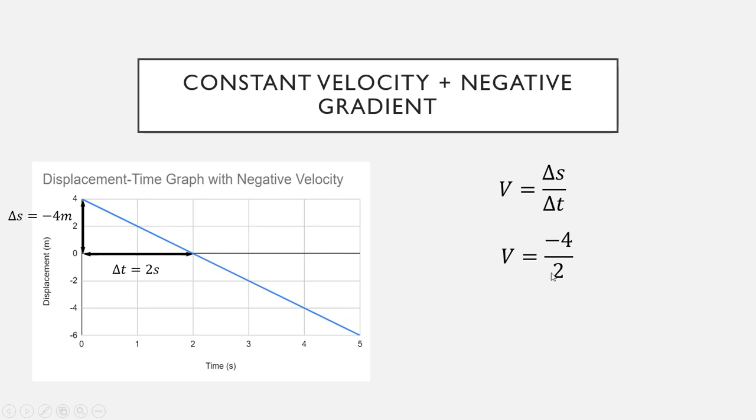Let's substitute those two numbers in. Our delta S of minus four goes on the top, our delta t on the bottom, and that gives us a velocity of minus two meters per second. And remember that displacement and velocity is a vector, so that's why we can have our minus there. Whenever you have a negative slope, you should be expecting a negative answer.